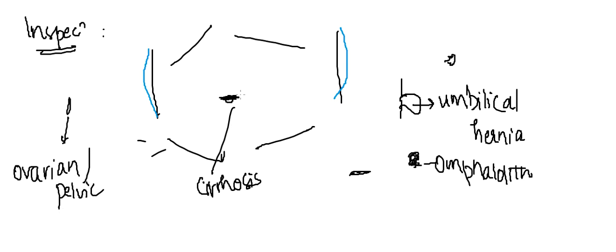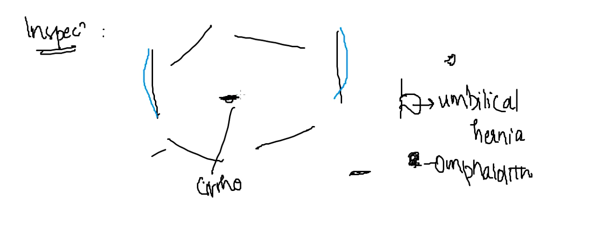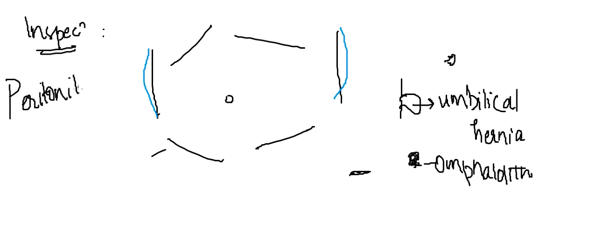Next, in the movements, you will have to see whether the abdomen is moving normally on inspection. If the abdomen is still with no movements, this occurs in peritonitis — you may not see any movements in peritonitis.